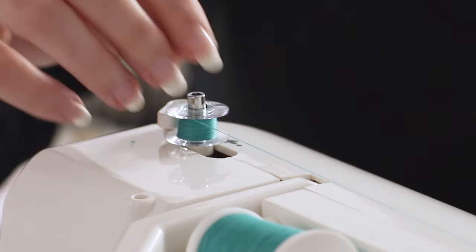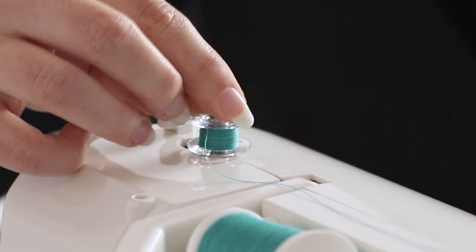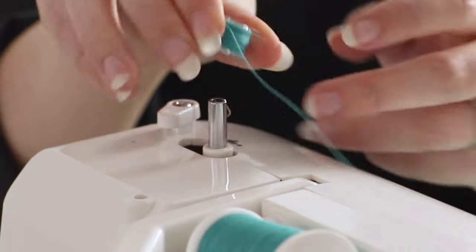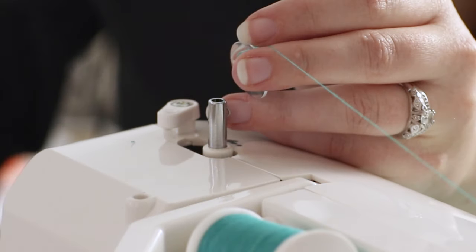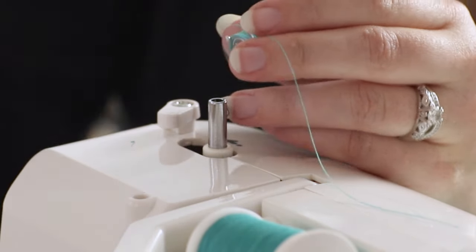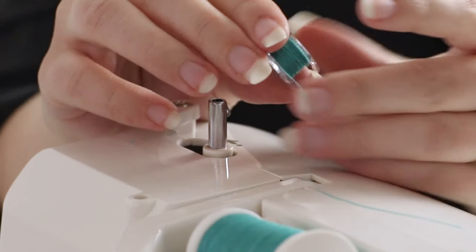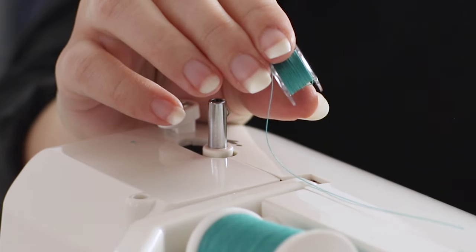When you're done winding, move the bobbin winding spindle back to the left, remove the bobbin, and trim the thread. Now we're ready to put it in the machine.